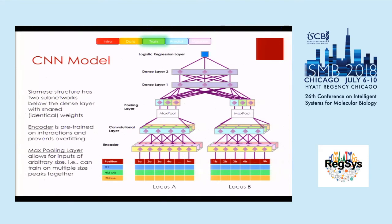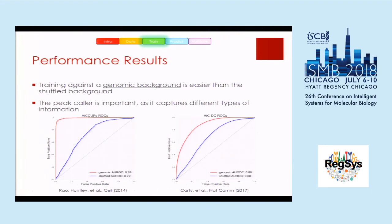How good is this model at distinguishing peaks from non-peaks? The red curve here corresponds to the ROC when using a genomic background, and the blue is the shuffled background. On the left, I have the performance on HiCCUPS peaks from Rao et al.'s paper — these are very conservative, easily reproducible peaks. On the right, we have peaks from Hi-C DC, which comes from Christina Leslie's lab. It's very similar to Fit Hi-C from Bill Noble's group. These are much more sensitive, much more difficult to reproduce, but from what I've seen, they seem to pick up more functional interactions.